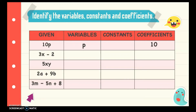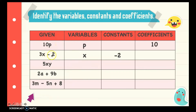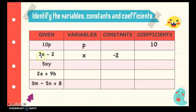For 5xy: the variables are x and y, there is no constant, and the coefficient is 5. For 2a + 9b: the variables are a and b, there is no constant, and the coefficients are 2 and 9.